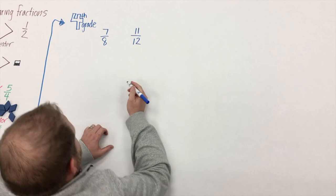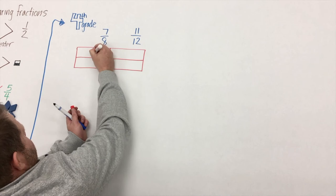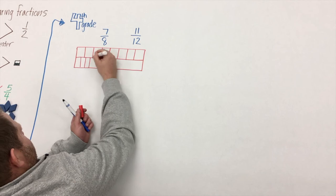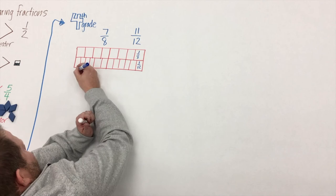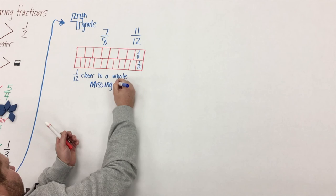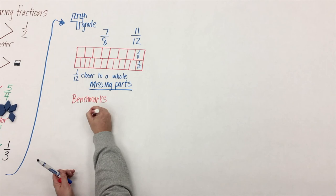In fourth grade, we continue to build students' understanding of comparing fractions. They come to us with this understanding of common denominators, common numerators. Here's another strategy students can use to compare seven-eighths and eleven-twelfths. They're both missing one part from a whole, but students know because of their understanding of a unit fraction that an eighth is actually larger than a twelfth, and therefore it's farther away - it's missing a greater piece of its whole.